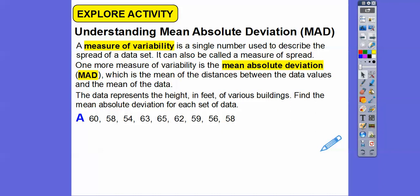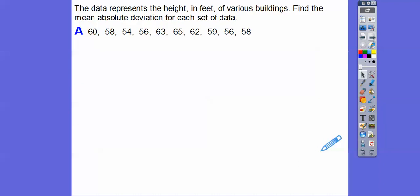The data set represents the heights in feet of various buildings, probably in cities and stuff. City A, I'm supposing. Find the Mean Absolute Deviation for each set of data. First let's find the mean of those numbers.